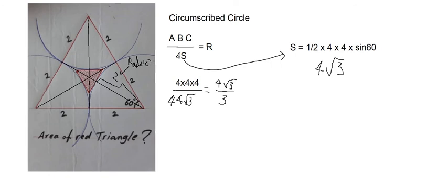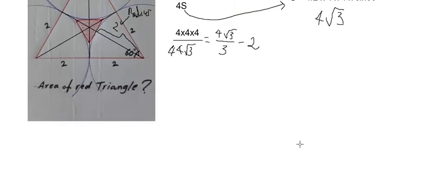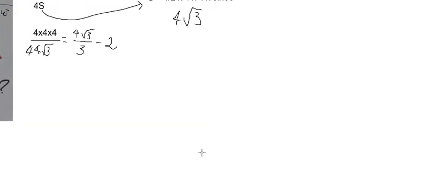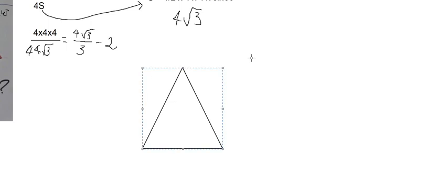We can calculate the distance from the center to the red triangle. We take the circumradius and subtract 2. Next, I draw another auxiliary triangle to work with this length.